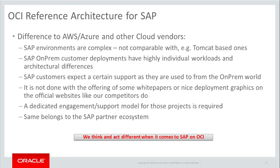Other important factors are: SAP environments are complex, not comparable with a more simplified kind of Tomcat-based application deployments. SAP on-prem customer deployments have highly individual workloads and architectural differences. SAP customers expect a certain level of support as they are used to from the on-prem world. It is not done with the offering of some white papers or nice deployment graphics on official websites like our competitors do. A dedicated engagement or support model for those projects is required, and the same applies to the SAP partner ecosystem of Oracle.